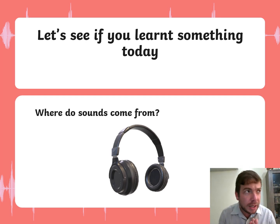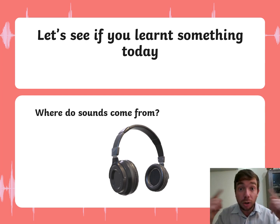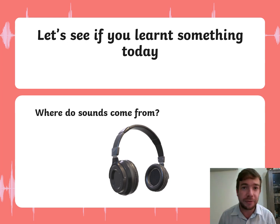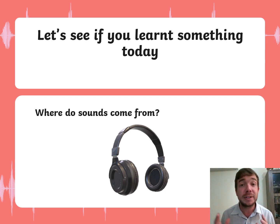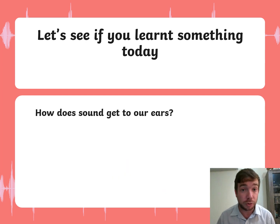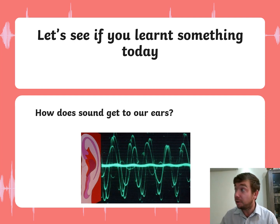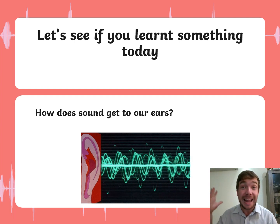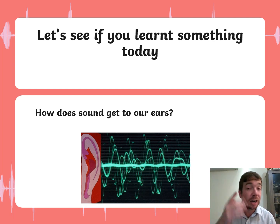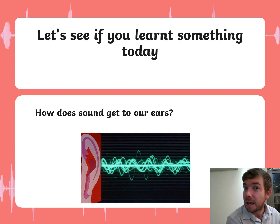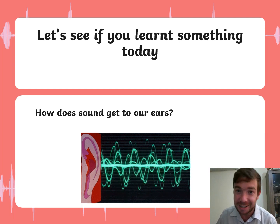Where do sounds come from? Right now you're listening to me, and the source of the sound is the speaker. As we've seen, sound can come from animals — like ducks — or from nature — like thunder and rain. There are different types of sources, but sound always comes from a source. How does sound get to your ears? Sound waves vibrate the material around us — which is air — and those vibrations travel all the way to your ear.